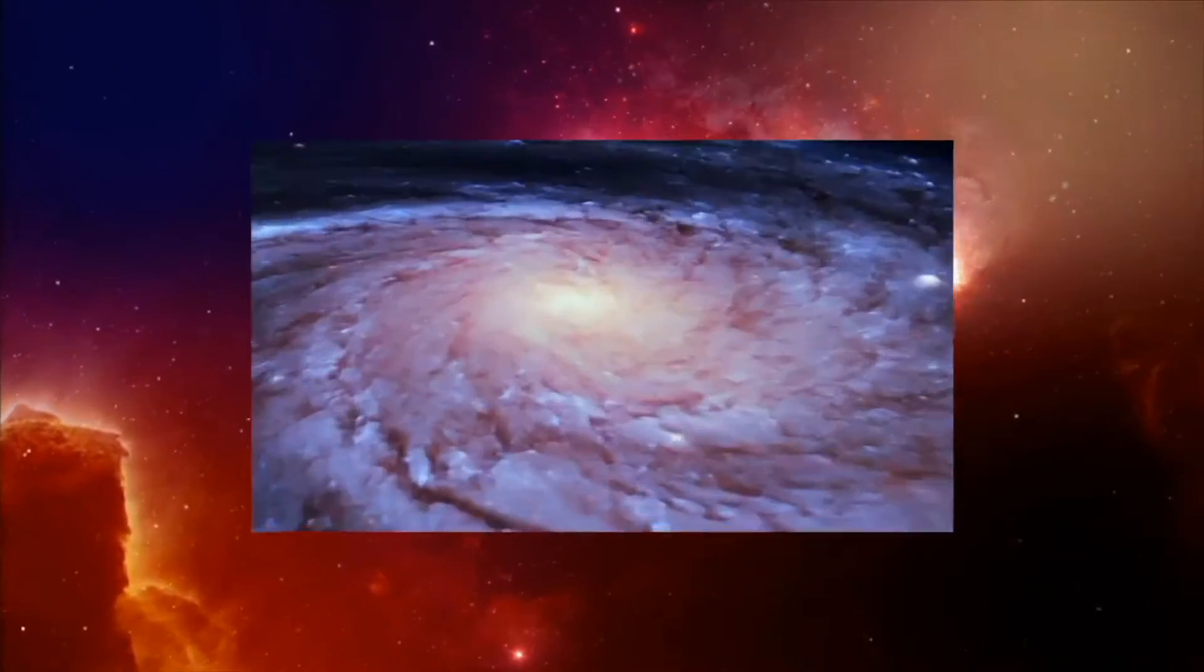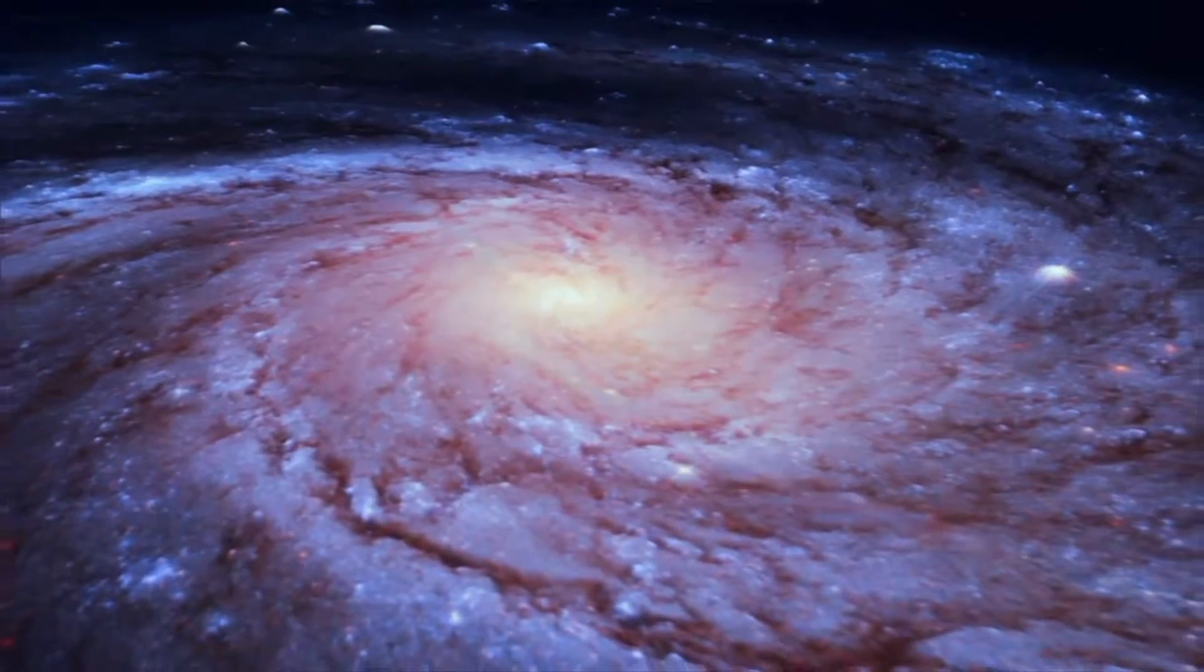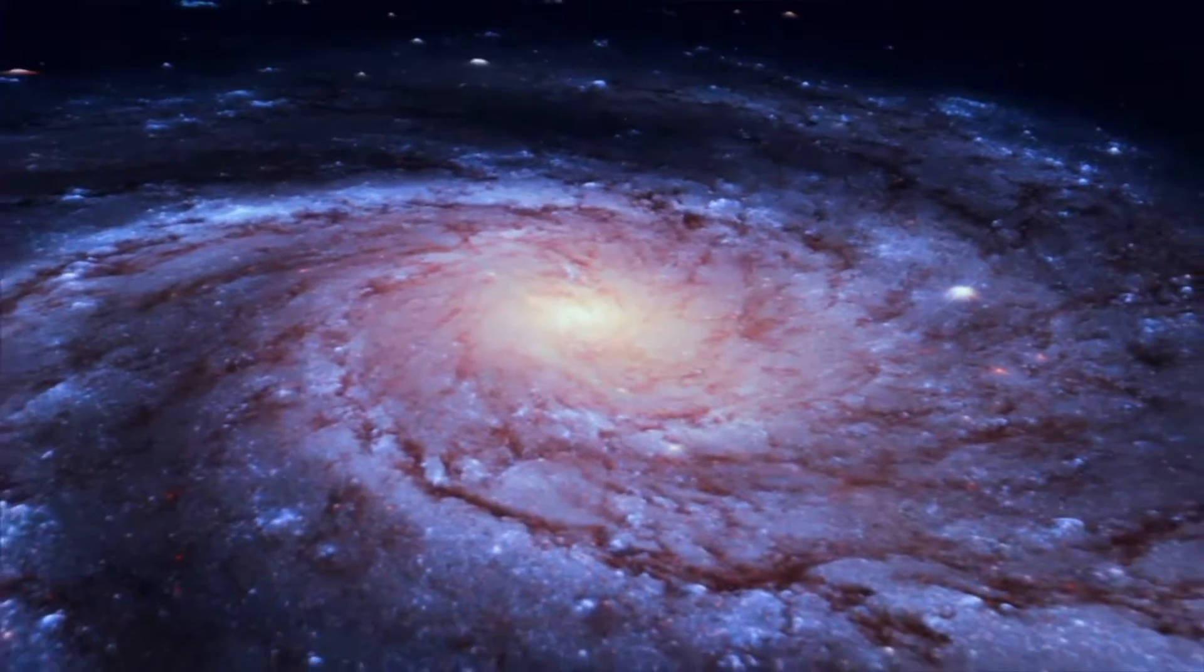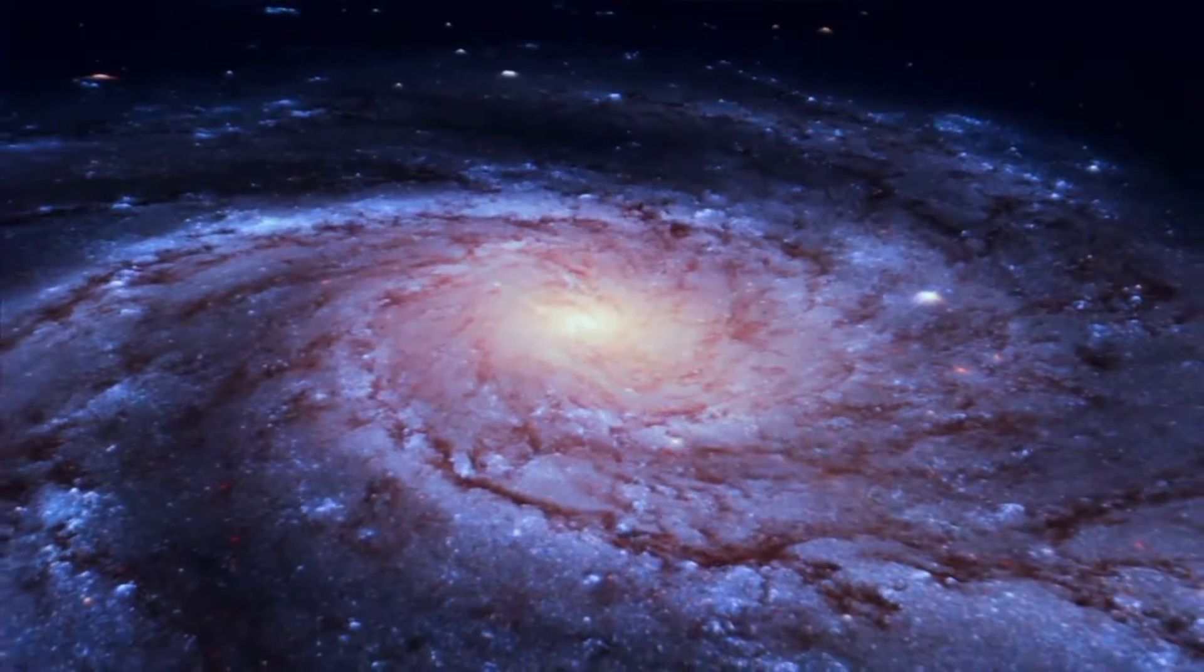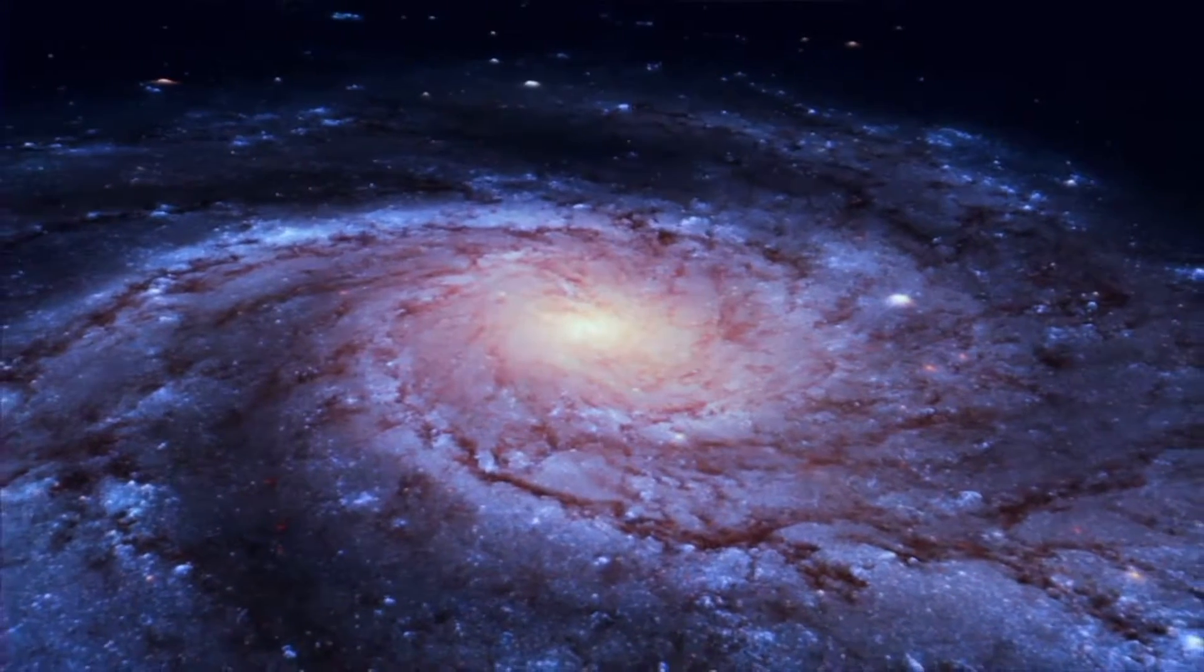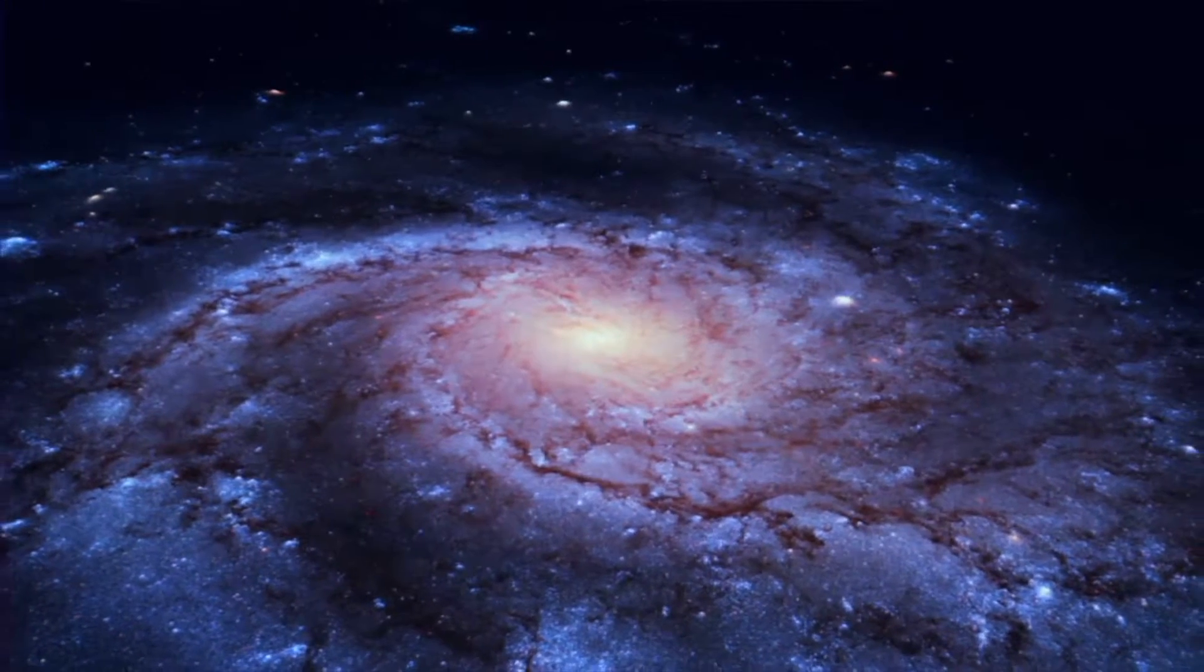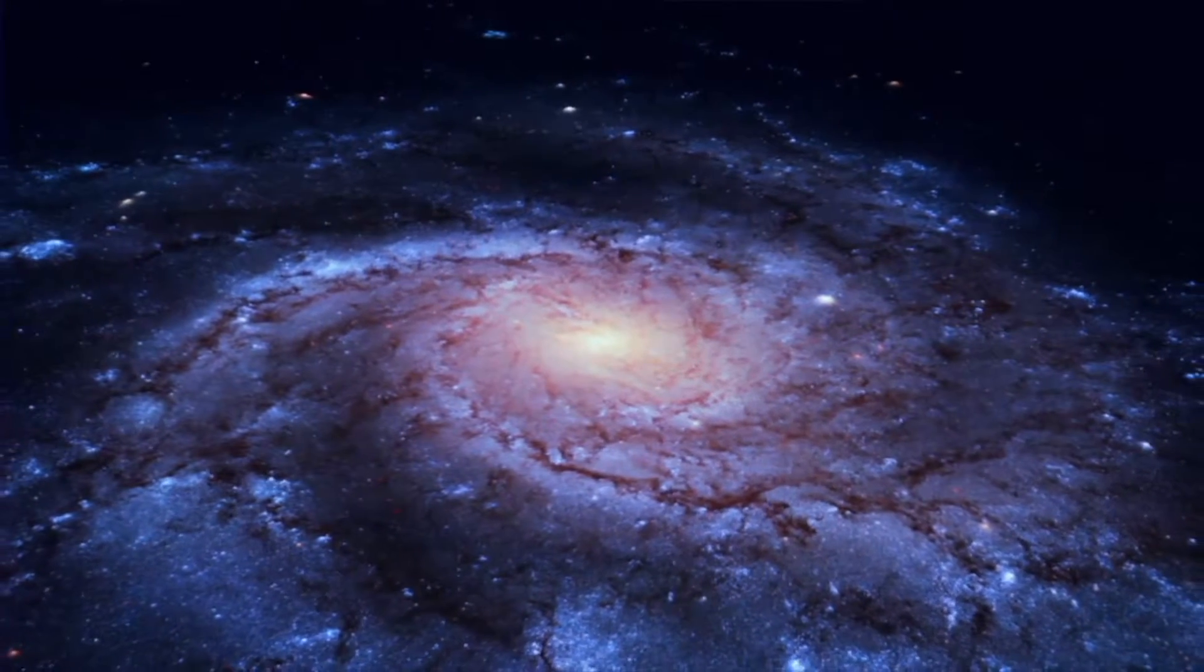In a spiral galaxy, the stars, gas, and dust are gathered in spiral arms that spread outward from the galaxy's center. Some spiral galaxies have very loosely wound arms, while others have very tightly wound arms.